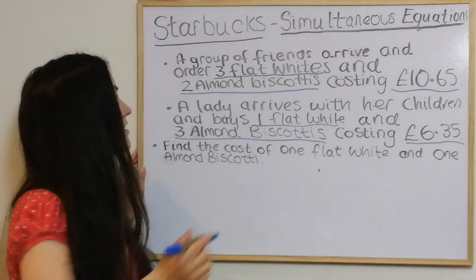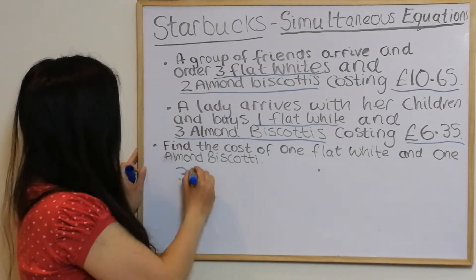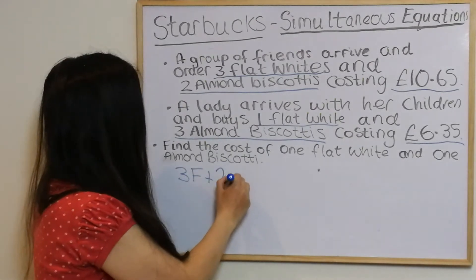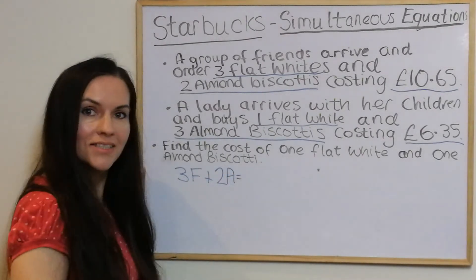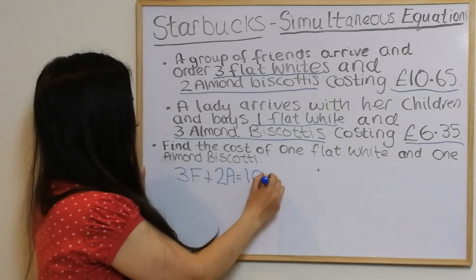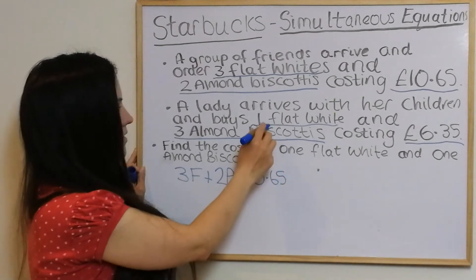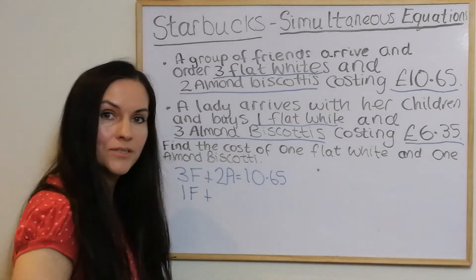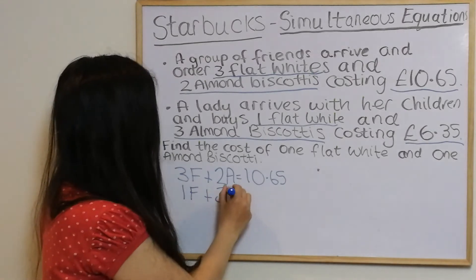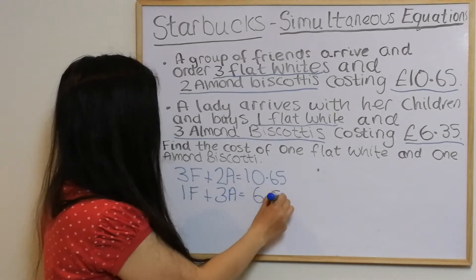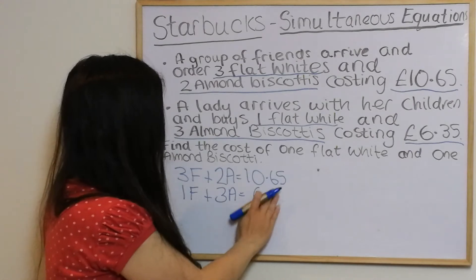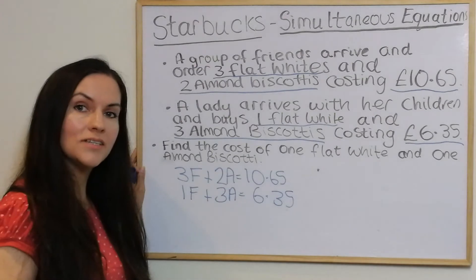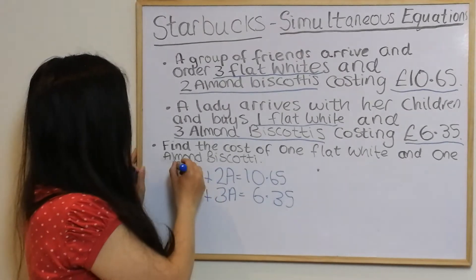We use simultaneous equations. We write the first order as 3f plus 2a equals ten pounds sixty-five, where f is flat whites and a is almond biscottis. The second order is 1f plus 3a equals six pounds thirty-five. I'll use the coat hanger method from my previous simultaneous equations videos.